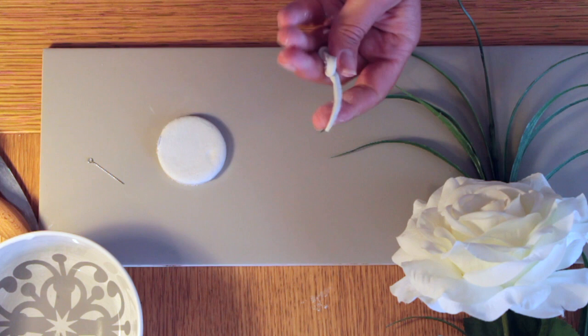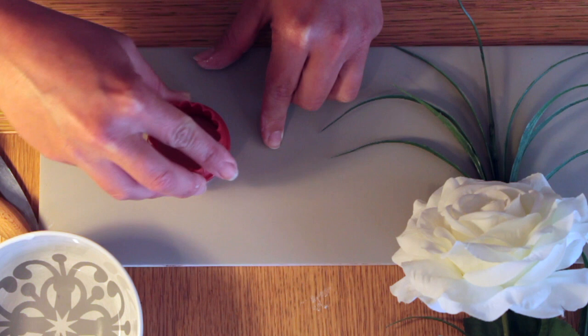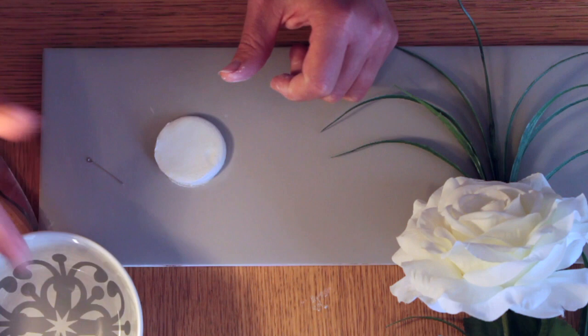So again just cut a circle, remove the excess, make sure the outside is nice and circular, and then we'll insert our piece of metal and then simply let it dry.